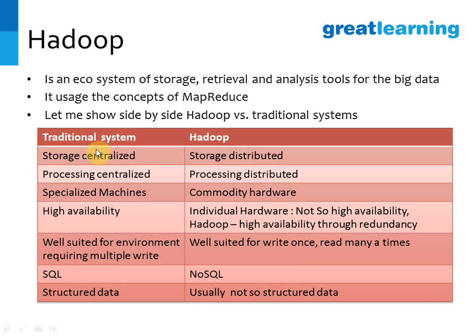Traditional systems require SQL, whereas Hadoop uses NoSQL, because NoSQL supports unstructured or less-structured data, while SQL is designed to work on structured data.